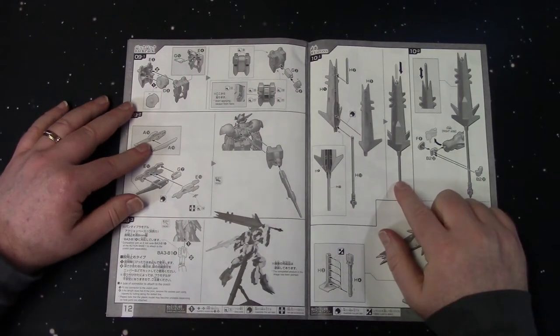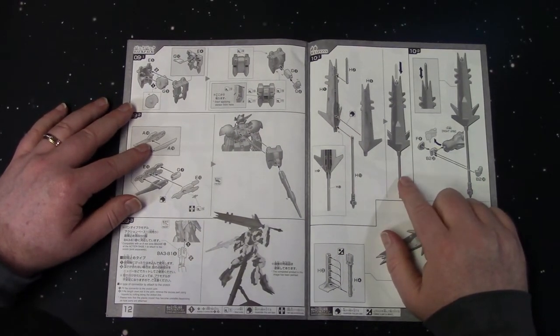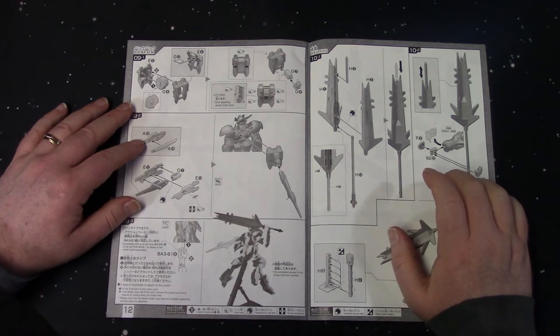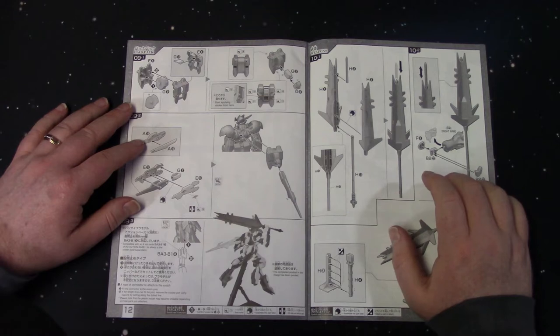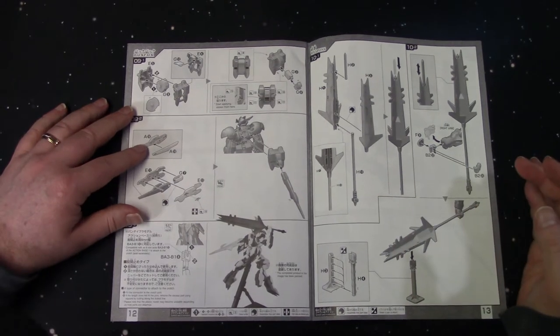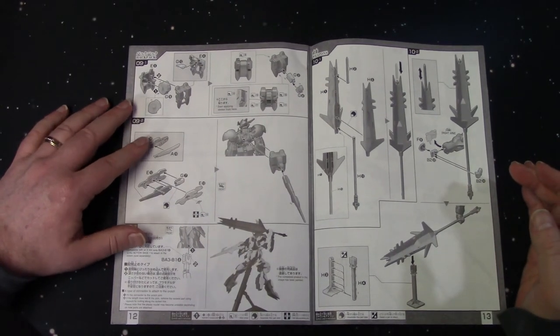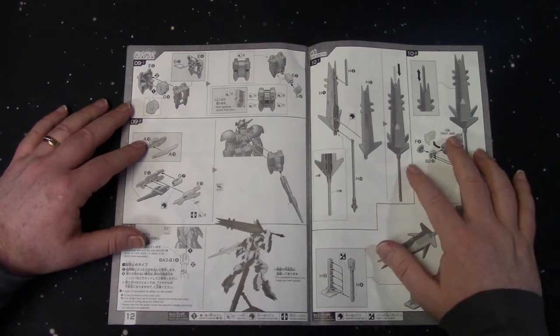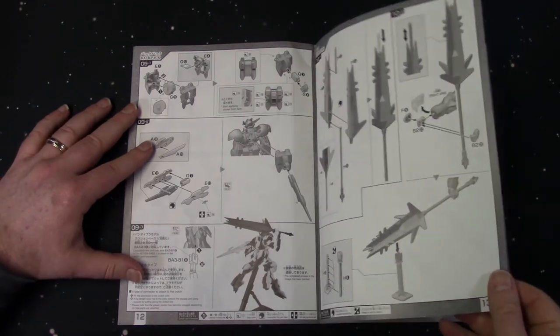There you go. I love the mace in this kit. I don't know why in the master grade they shrunk it down. I don't remember seeing the master grade version in the anime at all. Not even for a little bit. It was mostly like this one. So it's nice and big. It gives that whole intimidating look.